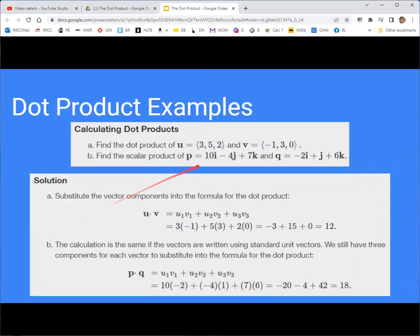So here's an example of the dot product between two vectors given in component form. Notice that we multiply their first components, 3 and negative 1, then their second components, 5 and 3, and then their third components, 2 and 0, and then those three products are added together to get a total of 12, which is a scalar result.